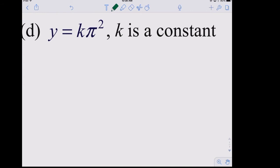For y = kπ², where k is a constant and π is approximately 3.14159 — this looks tricky, but kπ² is just a constant. The derivative of the left side is y prime or dy/dx, and the right side is carefully zero. You can't trick us — the derivative of any constant is zero.